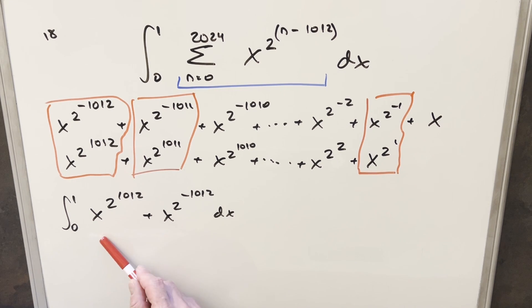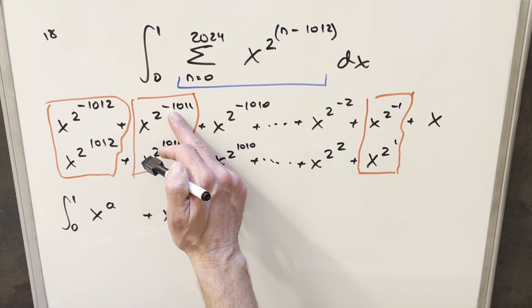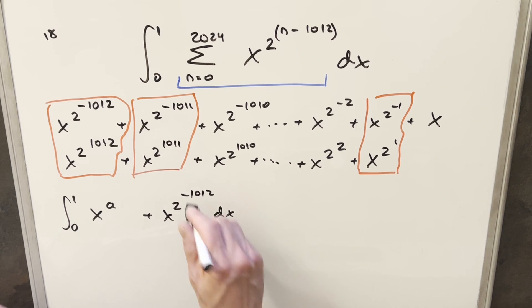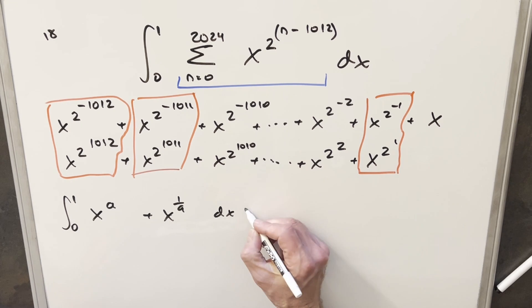But now what I really want to do with this integral is generalize it for all of these pairs. So instead of having this exponent 2 to the 1012 here, let's give it a generic label. We'll just call this a. But now when you have the negative exponent, this is just the reciprocal. So I can rewrite this exponent as 1 over a. Because a and 1 over a are both constant values, I can just use power rule and integrate.